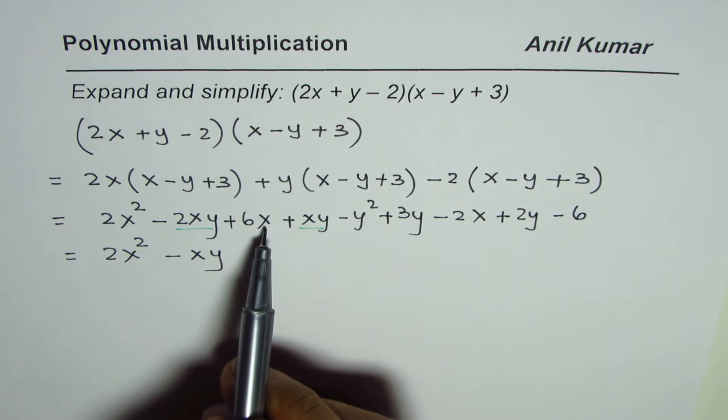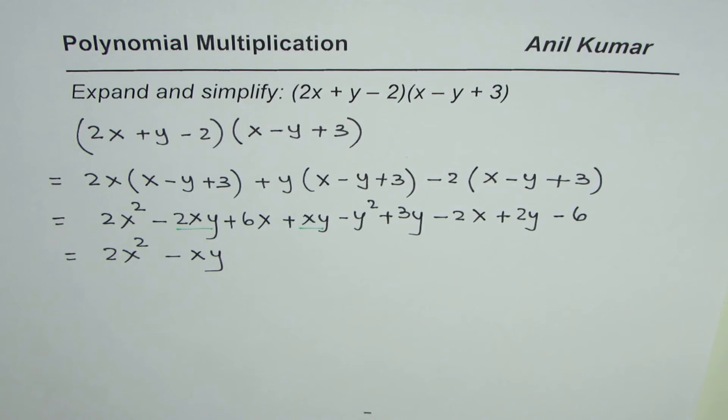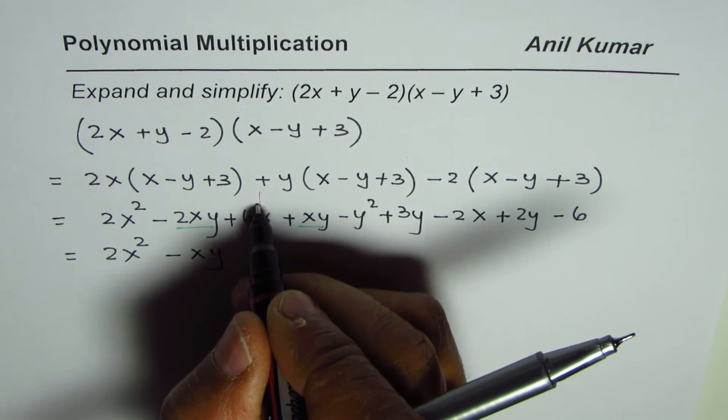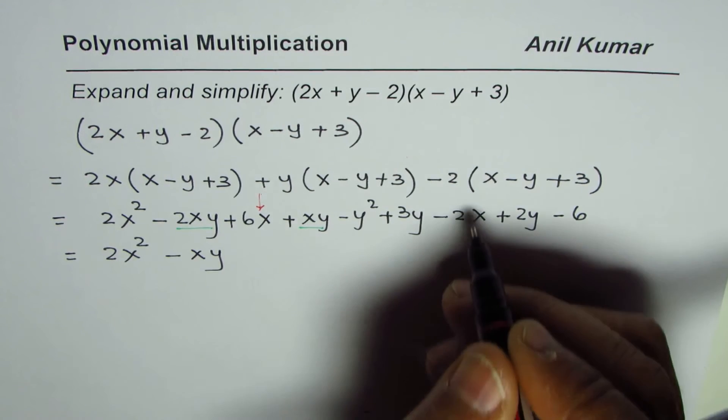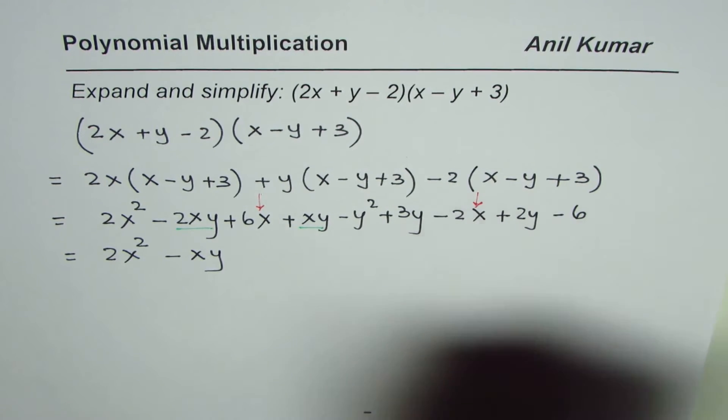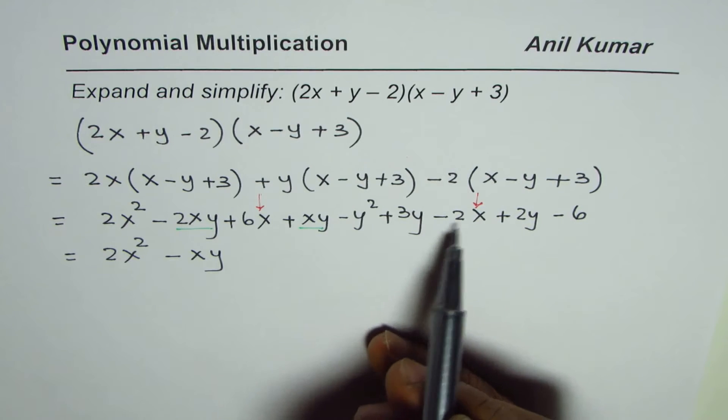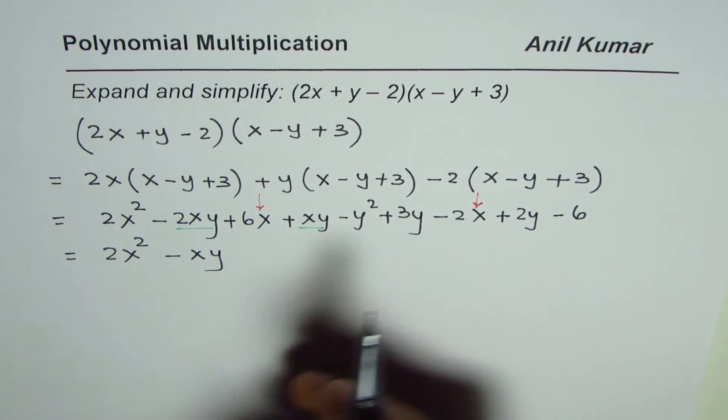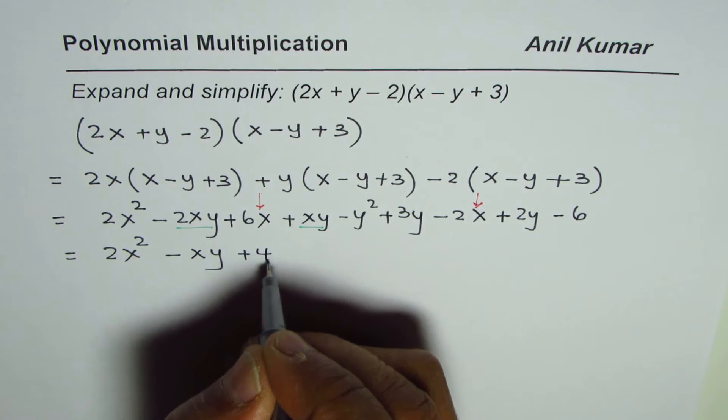Then we have x terms. We have two x terms: 6x is one term, then we have -2x. Combine these two: 6x and -2x gives us +4x.